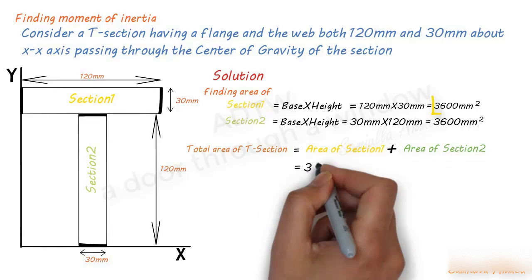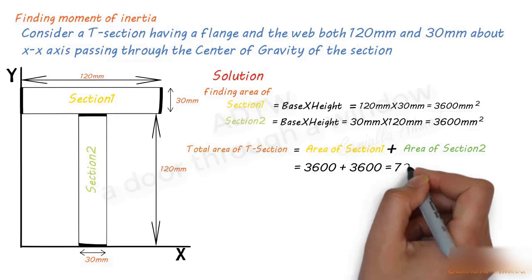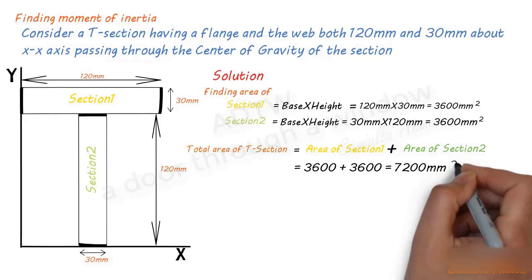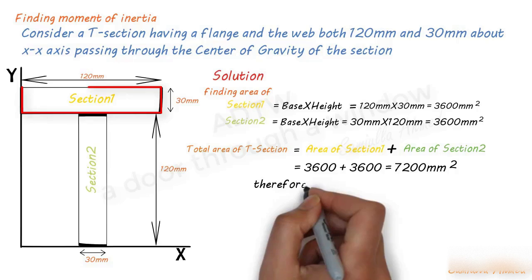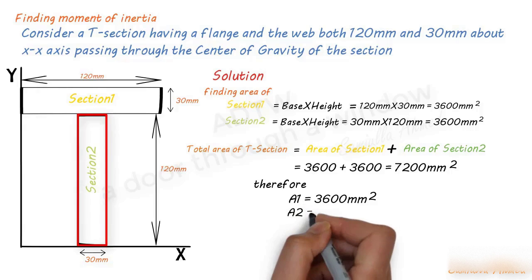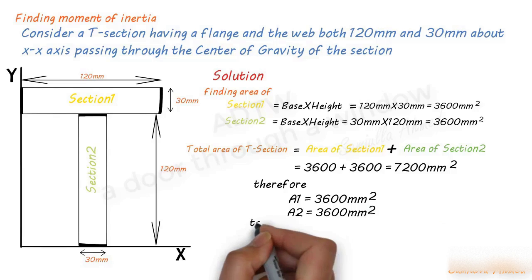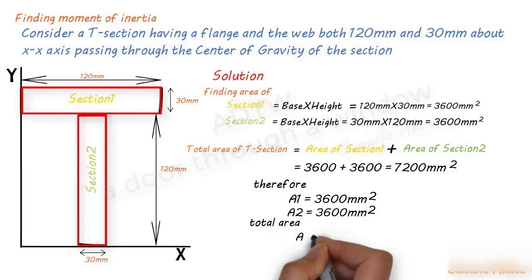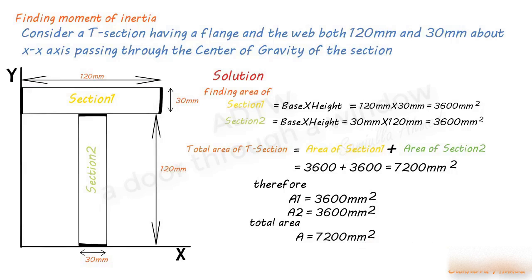Total area of the T-section equals the sum of the area of Section 1 and Section 2, which is 3600 mm² plus 3600 mm², equaling 7200 mm². Therefore A1 = 3600 mm², A2 = 3600 mm², and total area A = 7200 mm². Since we found the areas, we will now find the distance of the center of gravity of each area from the X and Y axes.